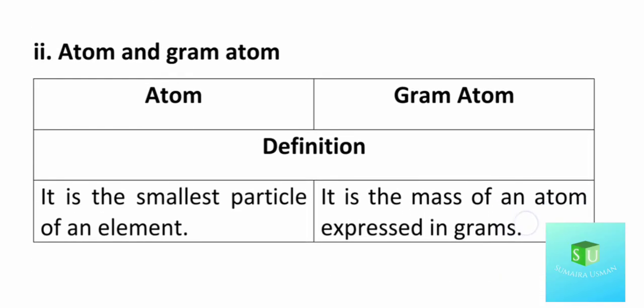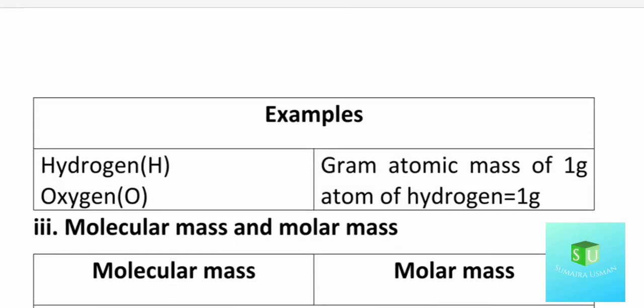The second part is atom and gram atom. An atom is the smallest particle of an element — for example, a hydrogen atom or an oxygen atom. A gram atom is the mass of atoms expressed in grams. For example, the gram atomic mass of one gram atom of hydrogen is 1 gram, and for oxygen the atomic mass is 16, so one gram atom of oxygen is 16 grams.